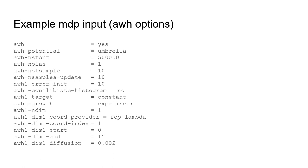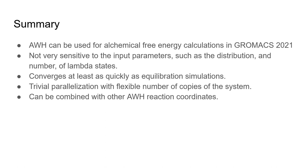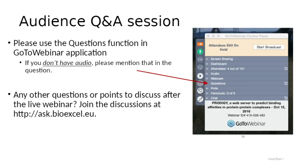To wrap up: since GROMACS 2021, AWH can be used for alchemical free energy calculations. There are few input parameters and it's not difficult to pick reasonable values — it's not very sensitive to them. It converges at least as quickly as equilibrium simulations. With a multiple walker system it's easy to parallelize using your compute resources. It can also be combined with other AWH reaction coordinates, for example if you are pulling through a system at the same time. Now we have time for questions.